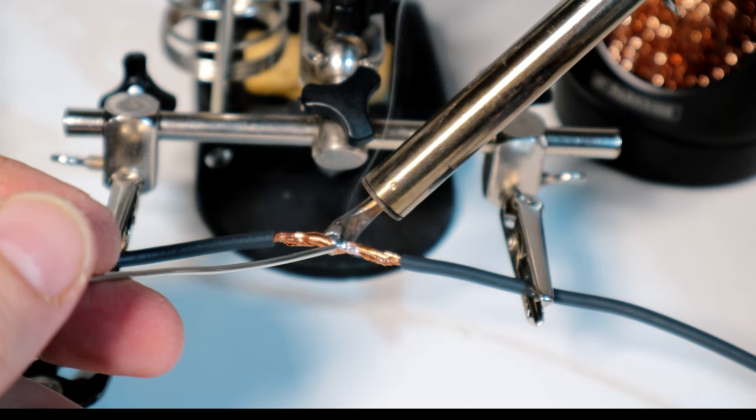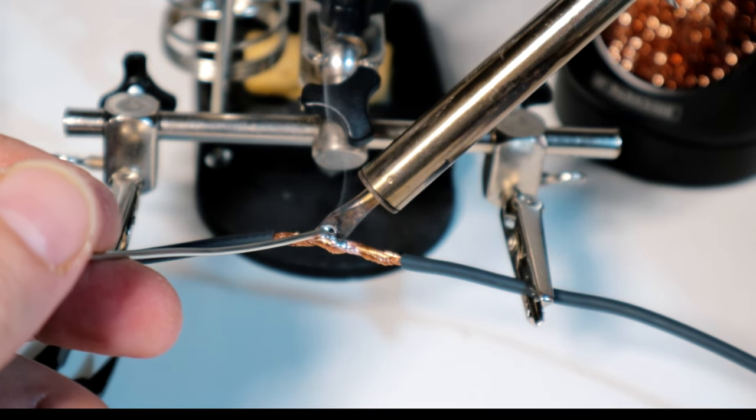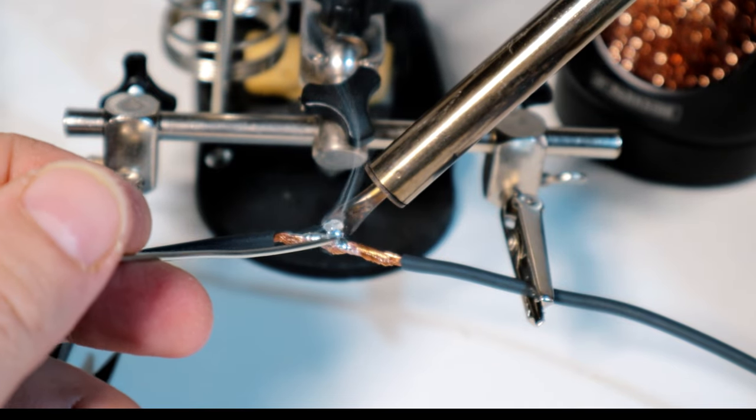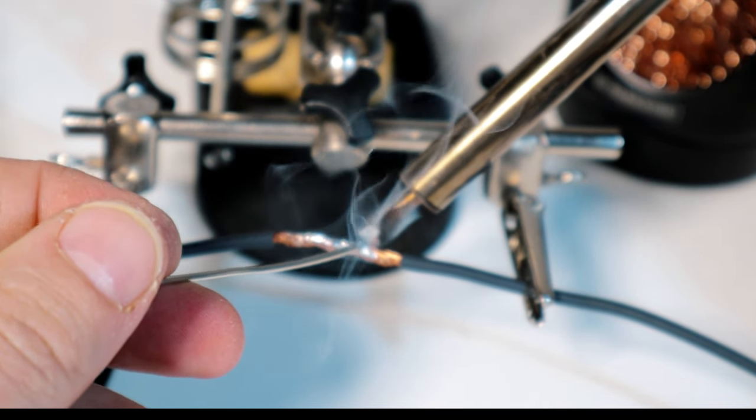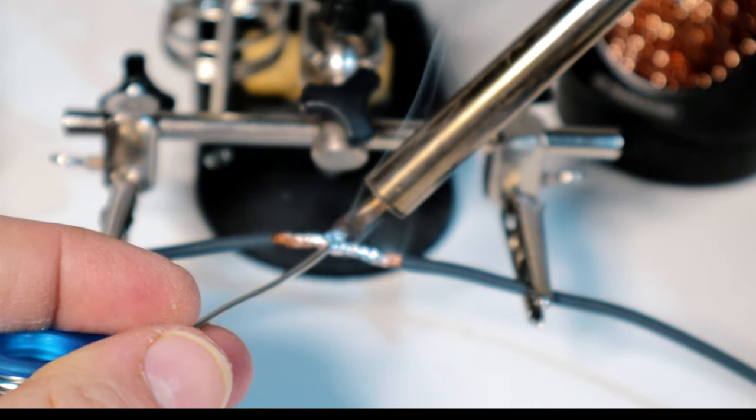Try not to move the electronic component while the tin is still molten so as not to compromise the compactness of the solder. Finally, check the result and make sure there are no short circuits or tin bridges.